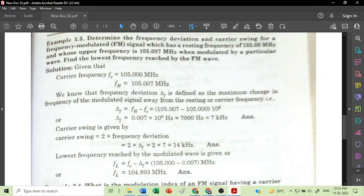Now as we have read this statement, the given data is: carrier frequency Fc is 105 MHz and upper frequency is 105.007 MHz. They have asked for the lowest frequency FL. So carrier frequency is given, higher frequency FH is given.